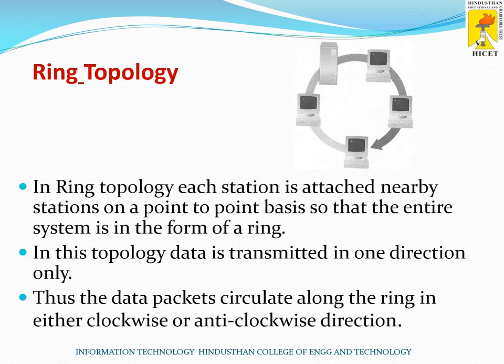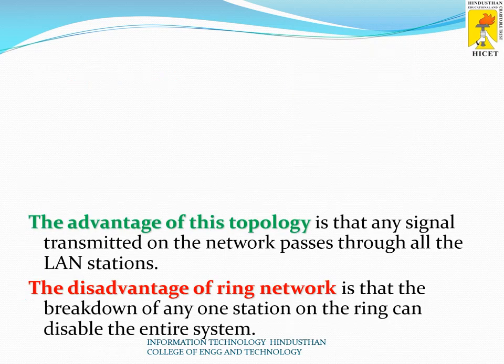In ring topology, each station is attached to a nearby station on a point-to-point basis, so the entire system forms a ring. Data is transmitted in one direction only, and data packets circulate around the ring in either clockwise or anticlockwise direction. A packet moves from one system to another system around the ring.